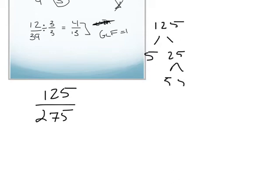And then I also know that 5 times 5 is 25. So if I take the product of 5 times 5 times 5, it gives me 125.